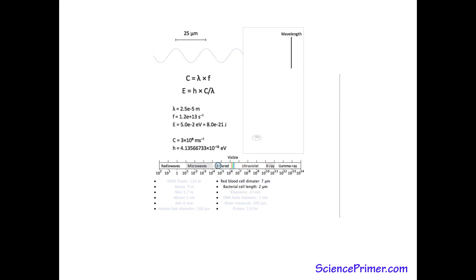Above red on the spectrum are microwaves, followed by radio waves. Below violet light is ultraviolet, followed by X-rays, then gamma rays.